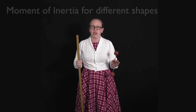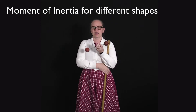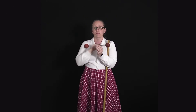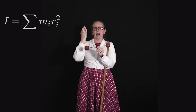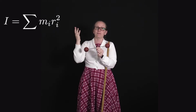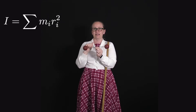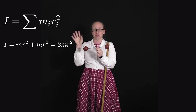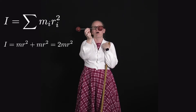Now we've seen what the moment of inertia is, let's have a look at how to calculate it for a few different shapes. Let's start with the simple case of two masses, both mass m and each a distance r from the pivot point. Because we've got discrete masses rather than a continuous mass — assuming the bar is massless — the moment of inertia i is equal to the sum over i of m_i r_i squared. Here we have two masses at the same radius r, so this equals mr² + mr² = 2mr².